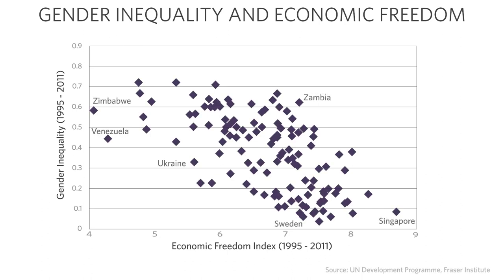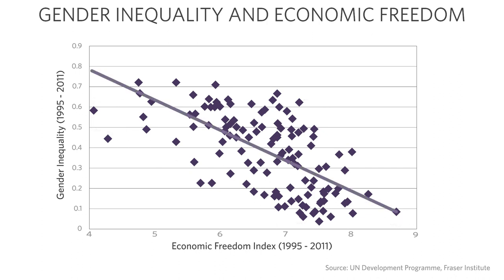What you're seeing now is the same data — economic freedom and gender inequality — but with each dot as a country. You can see this trend: as you go to the right with more economic freedom, you get less gender inequality. I can superimpose on top of this cloud of data points a line. Some people call it a trend line; statisticians call it a regression line. This line comes as close as possible to approximating the data points — think of it as the underlying average trend. As you move to the right, the line declines. This line gives us something we didn't have before: it can tell us by how much economic freedom is associated with changes in gender inequality.